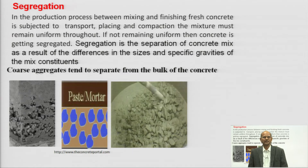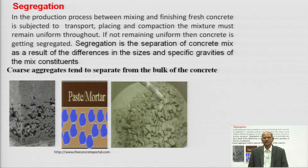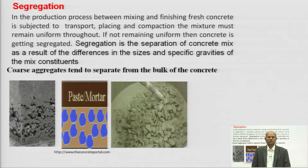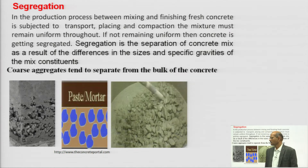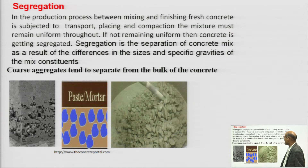During transportation, placing, and compaction, if the mixture remains uniform throughout these operations, we can say segregation has not taken place. But if it does not remain uniform, then the concrete is getting segregated. Segregation is the process in which the separation of the concrete mix takes place due to the different ingredients having different specific gravity. Coarse aggregate tends to get separated from the bulk of the concrete, which is a very dangerous situation resulting in very poor quality concrete.